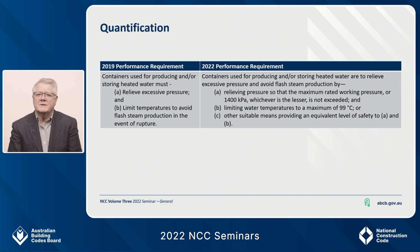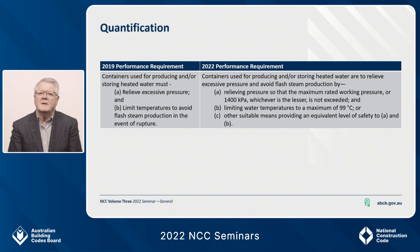This one is about excessive pressure for the temperature and pressure relief of water heaters. If you look at the 2019 requirement, you might be a bit stumped on what is considered excessive pressure, or what temperatures you need to limit the system to in order to prevent flash steam production. Now with the quantification, a specific temperature and pressure is listed, and again there is a degree of flexibility if the performance solution being used needs to deviate beyond these limits.